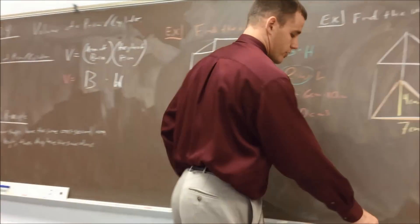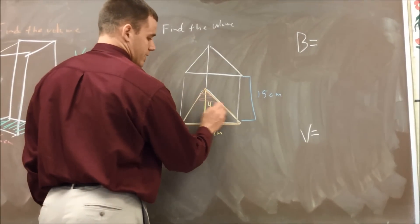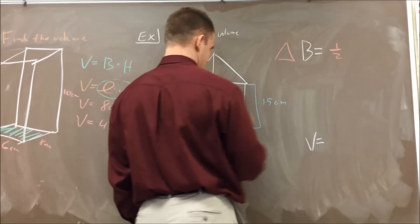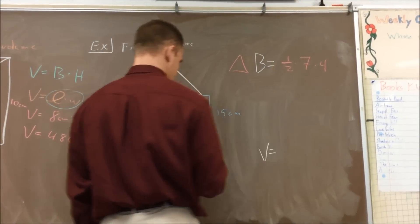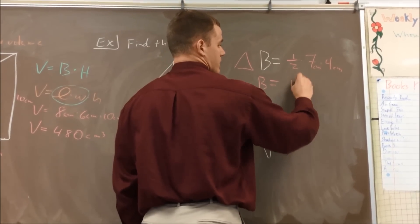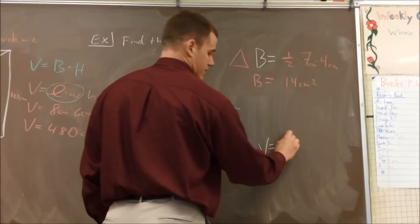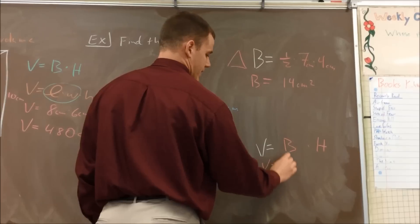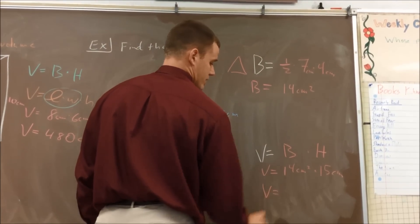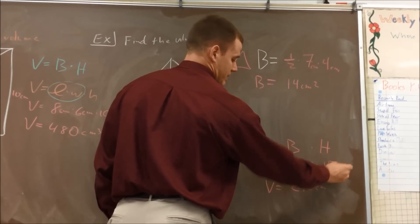Even if we have something like a triangular prism, we find the area of the base and multiply by the height of the prism. The base here is a triangle, so the area of the triangle is one-half times 7 times 4, which gives us 14 square centimeters. Then we take that times the height: 14 square centimeters times 15 centimeters gives a volume of 210 cubic centimeters.